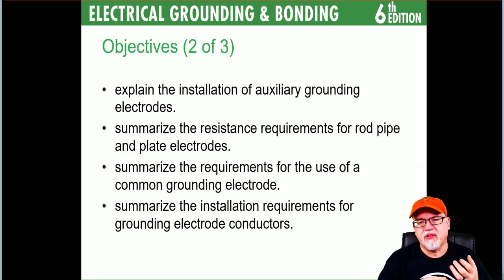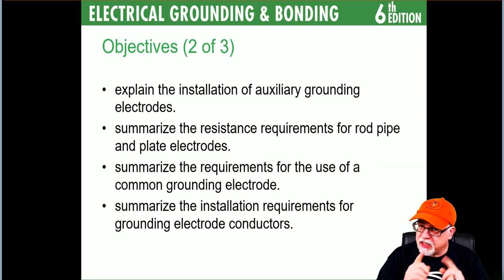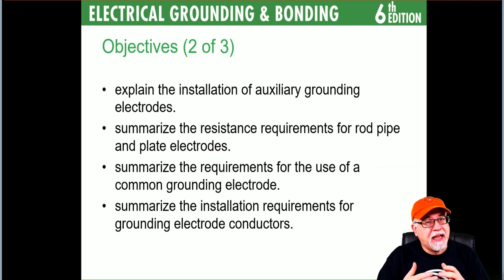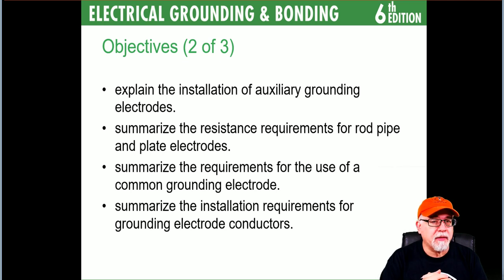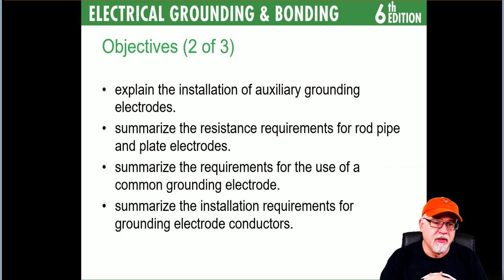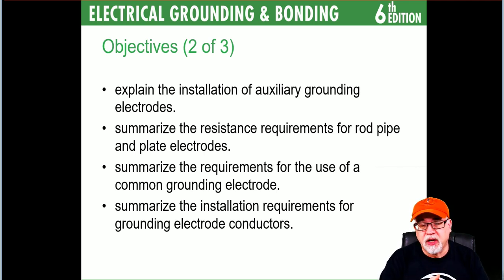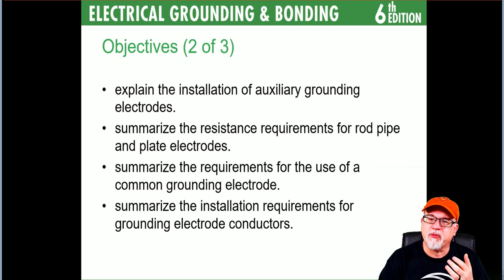You'll also learn about auxiliary grounding electrodes, which are different than supplemental. For example, a parking lot lamp pole might require an auxiliary grounding electrode by an engineer. An auxiliary is just optional — it doesn't have to meet all the normal rules within Article 250, but you get guidance from the engineer. You'll also learn to summarize the resistance requirements for rod, pipe, and plate type electrodes.